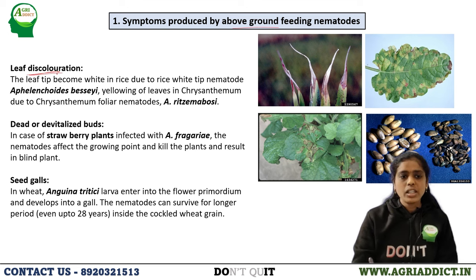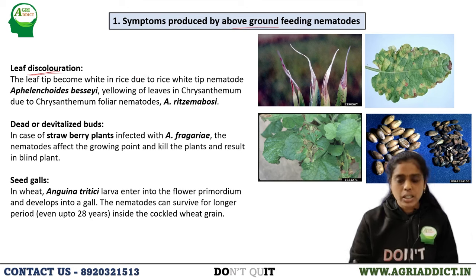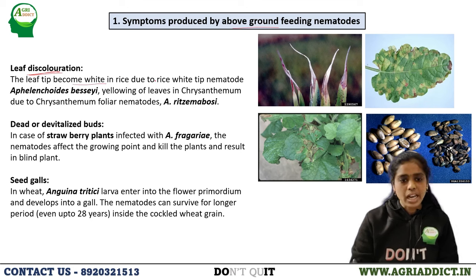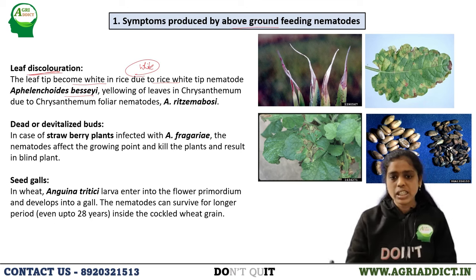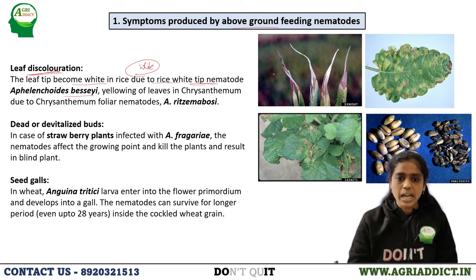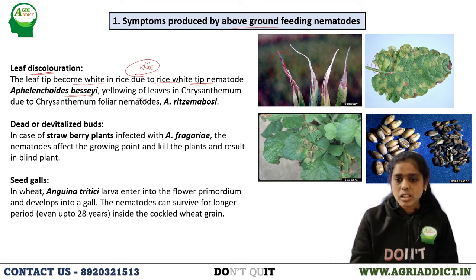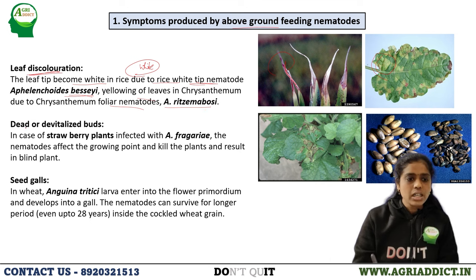The first symptom from above-ground feeding nematodes is leaf discoloration. The leaf tip becomes white in rice due to the rice white tip nematode, Aphelenchoides besseyi — hence the name white tip nematode. The entire leaf tip initially becomes white in color and later turns brown due to attack by the nematode. In chrysanthemum, the leaf turns yellow, attacked by the foliar nematode Aphelenchoides ritzemabosi.